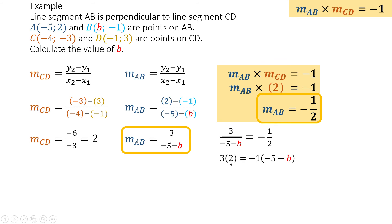Then multiply: 3 times 2 gives me 6. Distribute the negative 1, and that's what you get. Now I can calculate B by taking the 5 over and subtracting it, which gives me B equals 1.